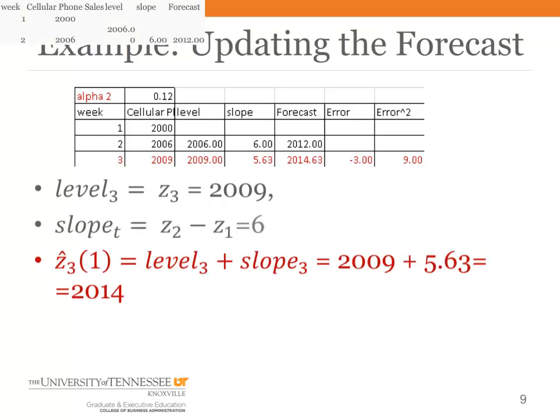And then we make our forecast in period 3 by adding the current level and the current slope. What we're doing by using exponential smoothing is we're keeping the slope more gradual in the way that it changes. And hopefully that's going to give us better forecasts.